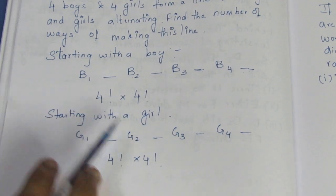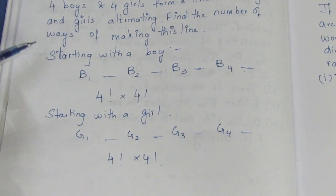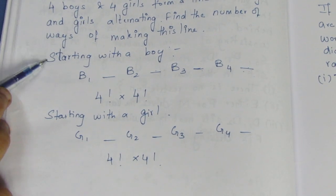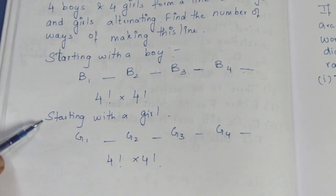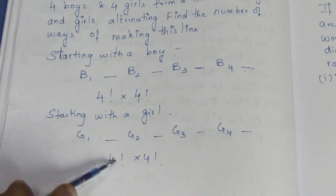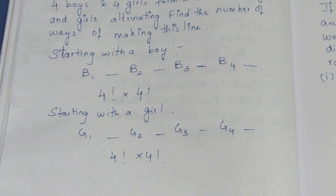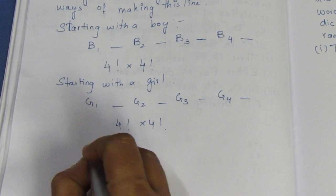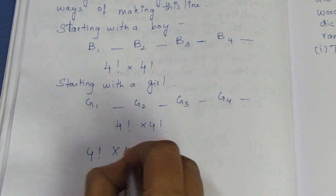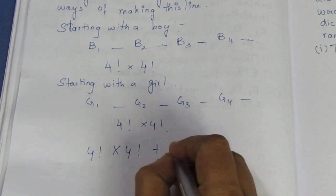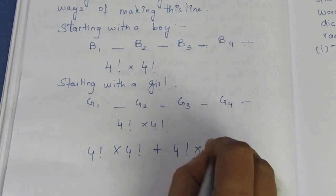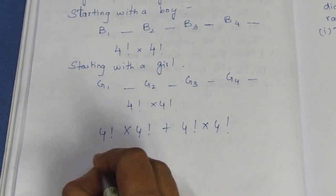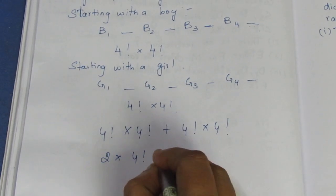That's why we are taking 2 cases. First, starting with boy — if you look at these two cases and add them. This is the boy case and the girl case. So we get 4! into 4! plus 4! into 4!. This is the same way — it comes to 2 into 4! into 4!.